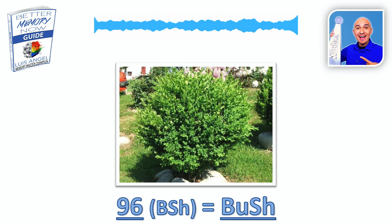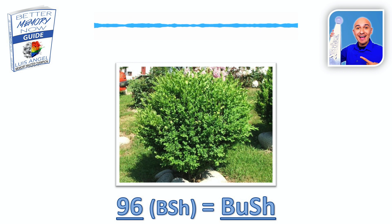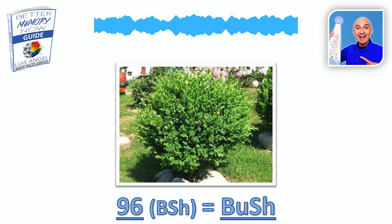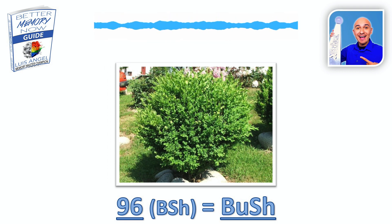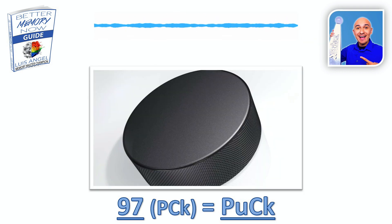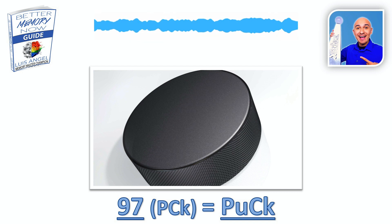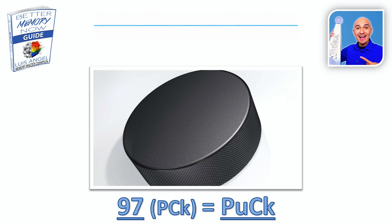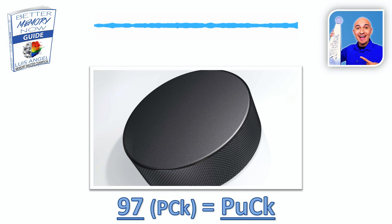96: we have the B sound for the nine, and for the six we have the SH sound. So we come up with bush for 96. 96 is bush. 97: we have the P sound and the C sound for nine and seven. So we think of a hockey puck — that little round dark black disc. Picture that for 97. 97 is puck.